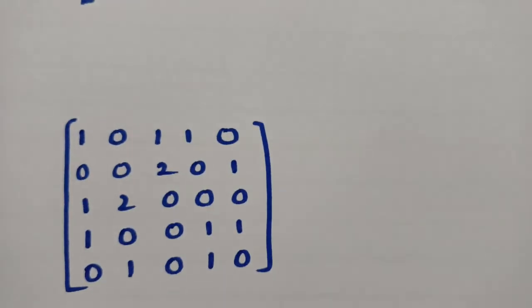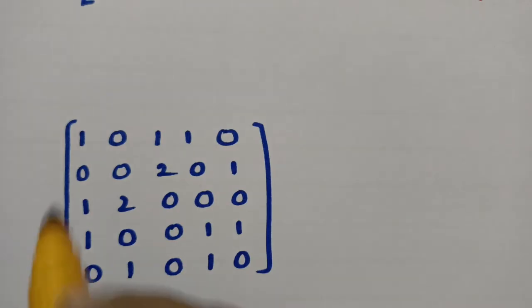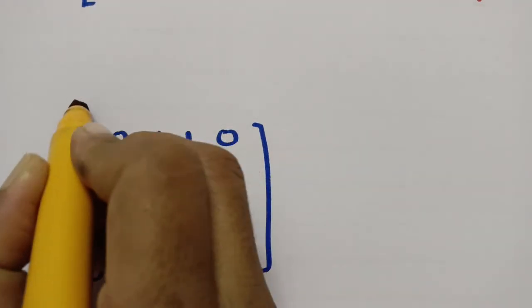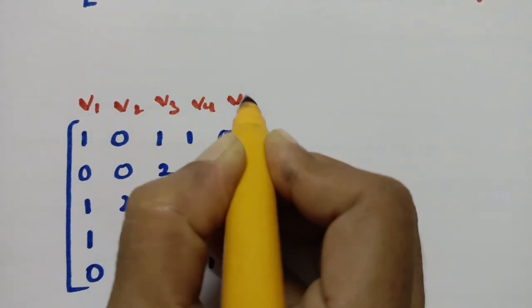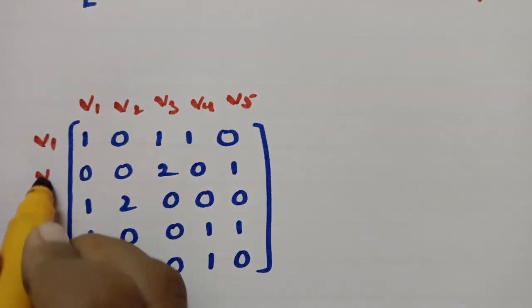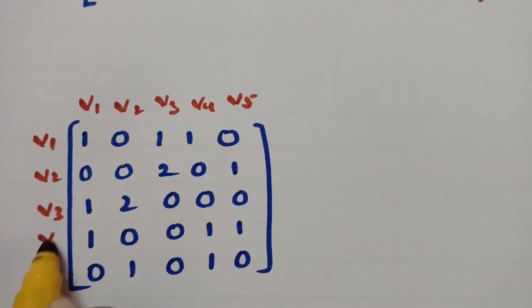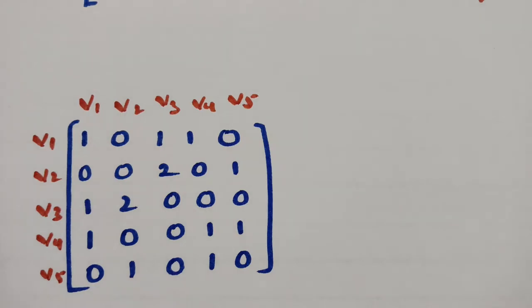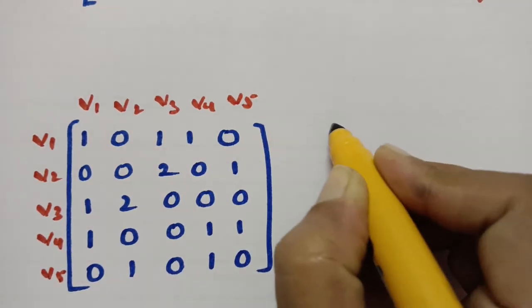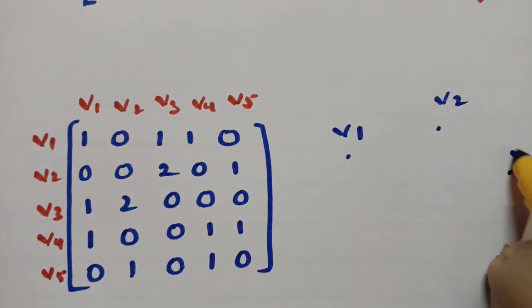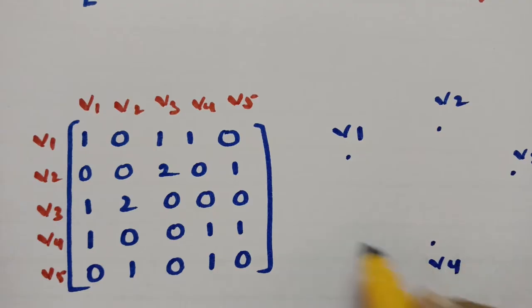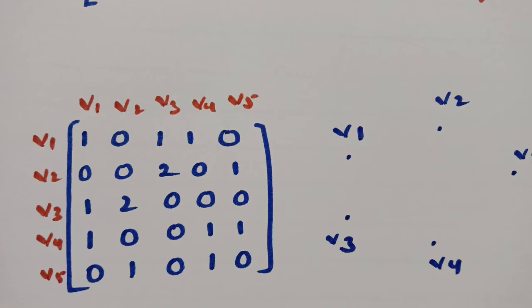Next, coming to this graph. Here, how many vertices are there? 1, 2, 3, 4, 5 — so again I am taking 5 vertices: v1, v2, v3, v4, and v5. And again here also: v1, v2, v3, v4, and v5. This is v1, this is v2, here is v5, here I am taking v4, and here v3. I will plot each and everything here.